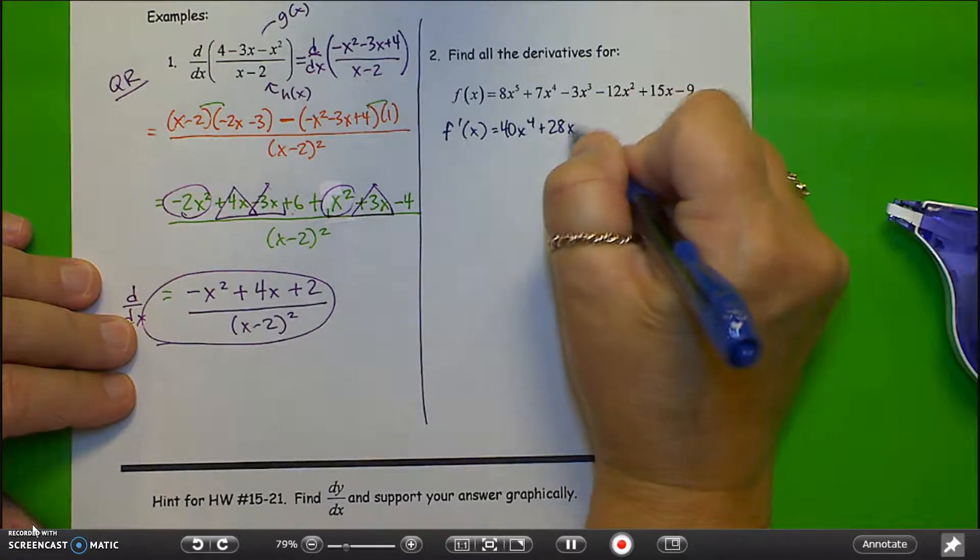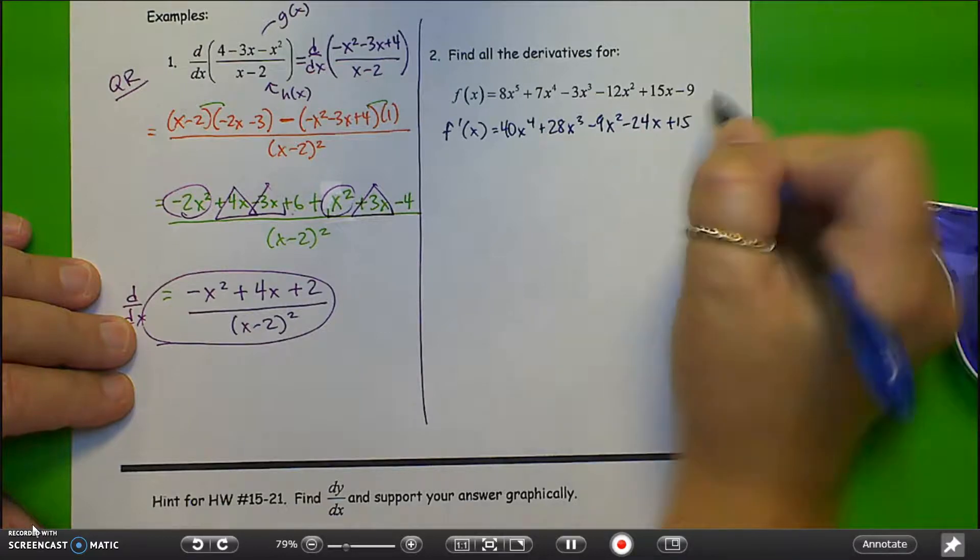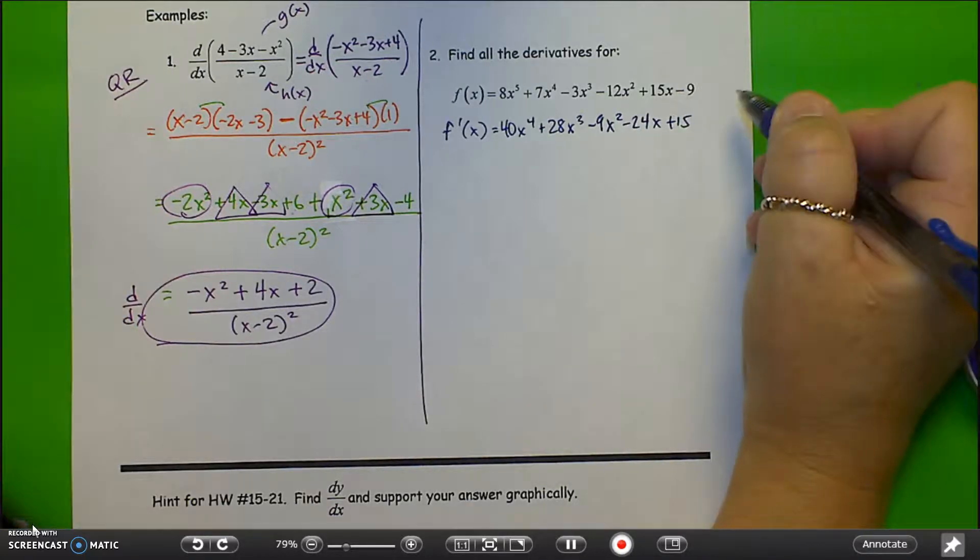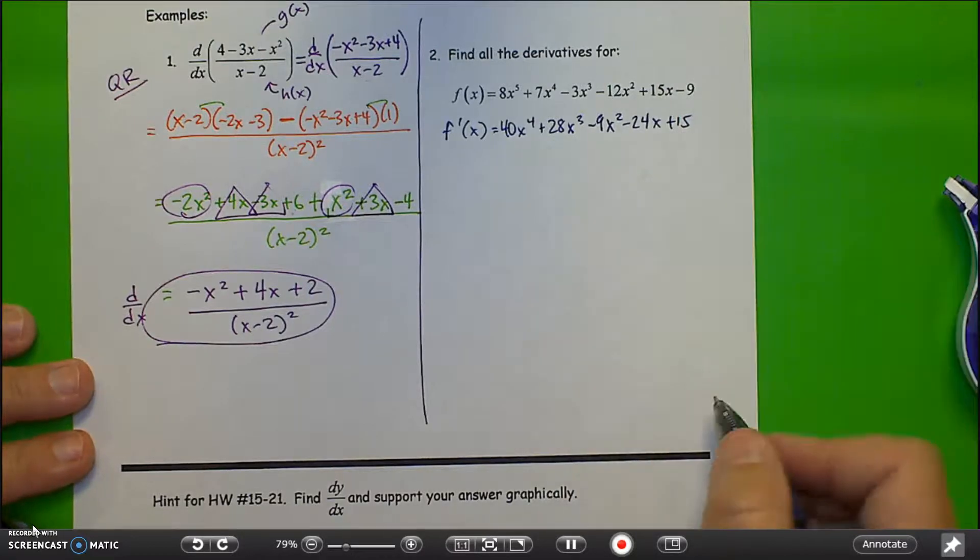I have 40x to the fourth, plus 28x cubed, minus 9x squared, minus 24x, plus 15, and the derivative of that is 0. So I'm done with that. So there's actually one less term in the derivative function. And the highest power of x is reduced by 1.